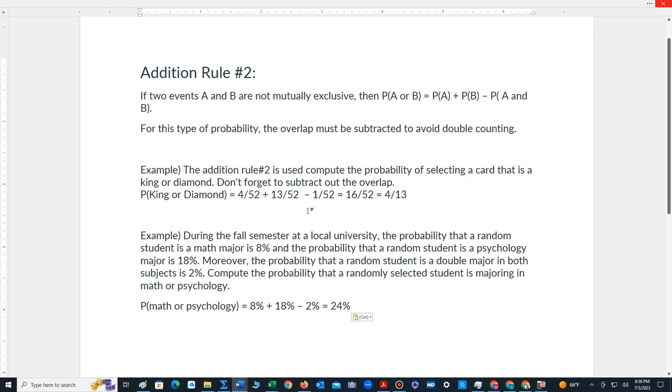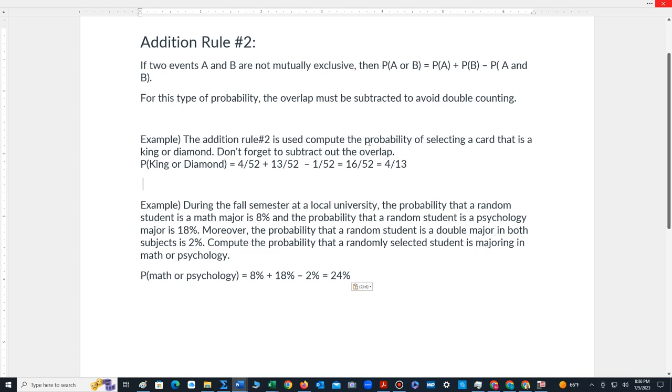Let's take a look at an example. Let's say that we want to calculate the chance of computing a card that is both a king or a diamond. So remember, there is a card that's common to both, the king of diamonds. So we have to make sure we don't double count that card. Let's look at our deck.